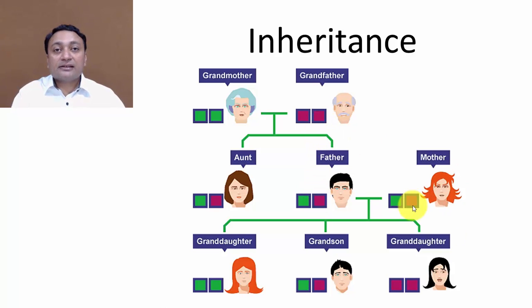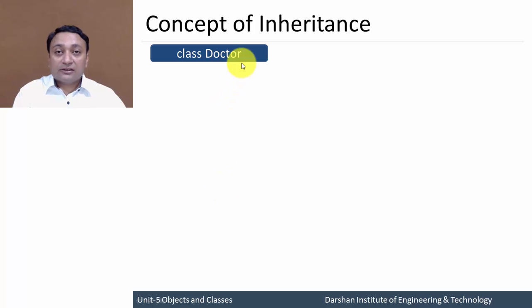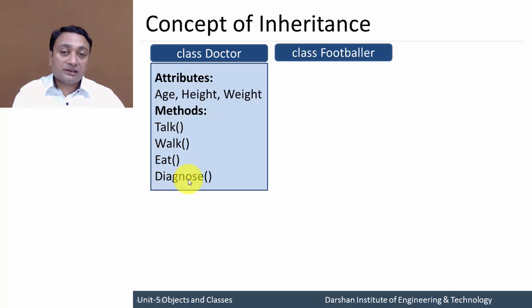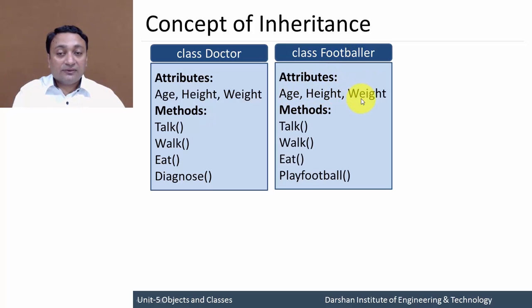Let us now discuss the inheritance concept in terms of object oriented programming and C++. Suppose we have a class Doctor having attributes like age, height, and weight as data members, and member functions like talk, walk, eat, and diagnose the patient. Here is the class Footballer having the same attributes age, height, and weight, and methods like talk, walk, eat, and play football.